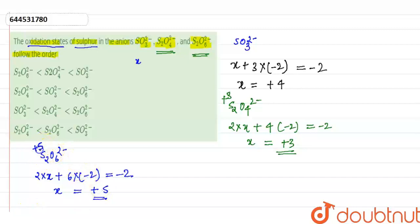So let's arrange these ions in their increasing order. The first one, the minimum oxidation state which is +3, is for S₂O₄²⁻, then for SO₃²⁻ which is +4, and then S₂O₆²⁻.